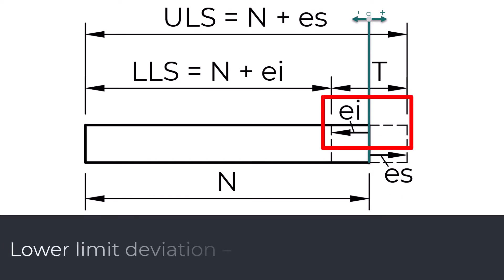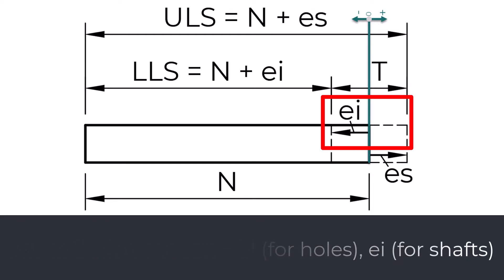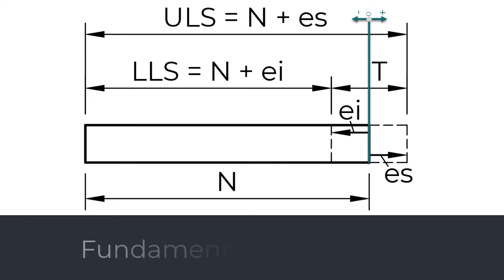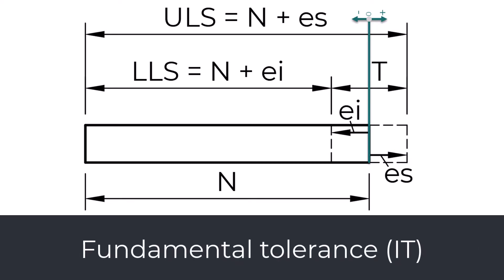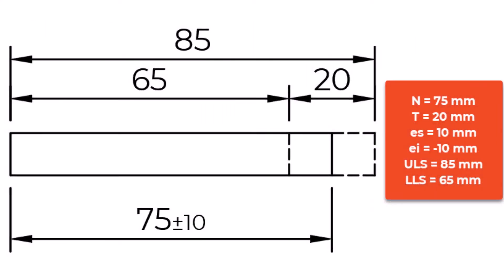Lower limit deviation — EI (uppercase for holes, lowercase for shafts) — is defined as the lower limit minus the nominal size. Fundamental tolerance IT is the difference between the upper limit deviation and the lower limit deviation. Tolerance is an absolute value. If we define the nominal value as 75 mm with a tolerance range of plus or minus 10 mm, our final product can be manufactured in the range between 65 and 85 mm.